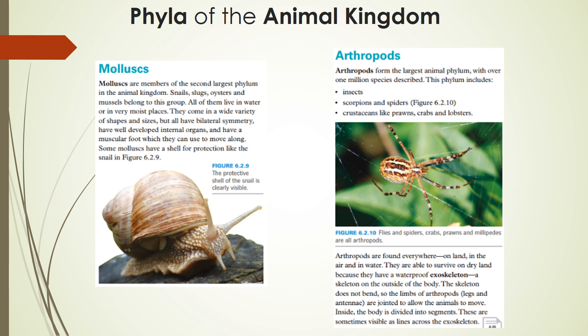Next up, we have two phyla generally characterized by having some sort of outer armor. On the left, we have molluscs, which are the second largest phylum within the animal kingdom, including snails, slugs, oysters, and mussels. All of them live in water or very moist places, and a lot of them have a shell. On the right, we have the largest animal phylum — arthropods — with over one million different species, including insects, scorpions, spiders, and crustaceans. Arthropods are found everywhere: on land, in the air, and in the water, and they're characterized by having a hard outer layer called an exoskeleton.